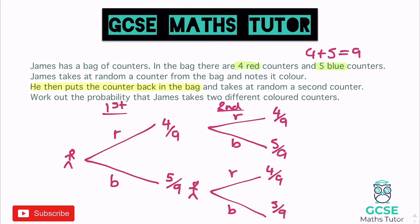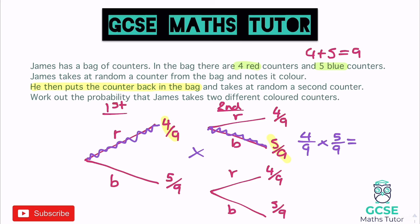We've constructed our tree. The question asks: work out the probability that James takes two different colored counters. There are two ways to do that. To get different colors I could go up the red branch and then take a blue. The two probabilities on this journey are 4/9 and 5/9. To work out the probability of that route, we multiply those two fractions together — you times when you go across the tree. So 4/9 × 5/9 gives us 20/81.